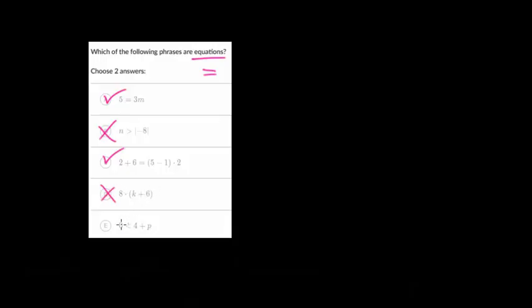Now we need to identify which ones are equations. With equations, they just have an equal sign. This one has an equal sign. This one is an inequality. This one also has an equal sign. This one doesn't have any sign, so it's an expression. And down here we have a less than, so that's an inequality. So it was just choices A and C that are equations.